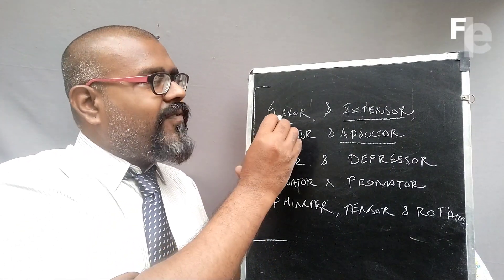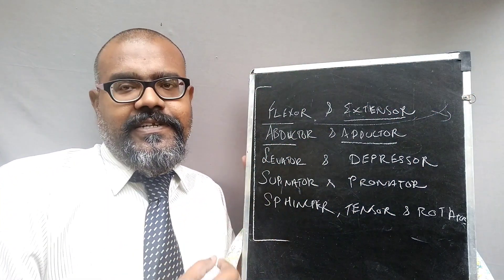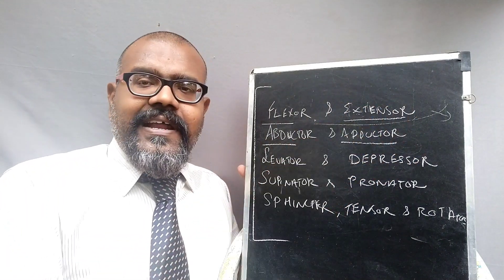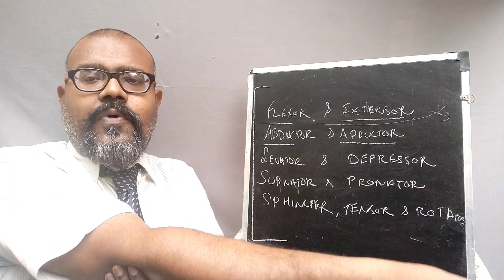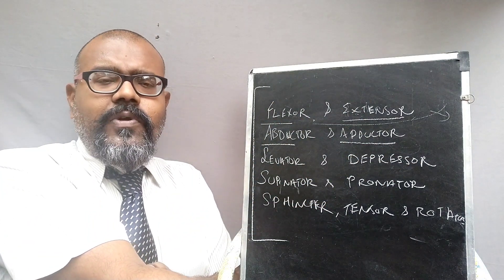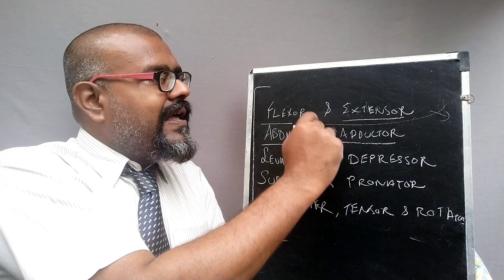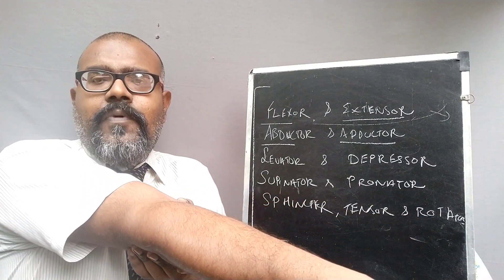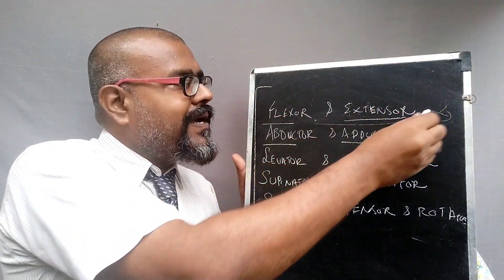Flexor and extensor are related to joint action. The flexor decreases the anterior angle at the joint, while the extensor increases the anterior angle at the joint. For example, at the elbow: if you want to decrease the anterior angle by bending, the flexor muscle is activated. If you want to increase the anterior angle by stretching the elbow, the extensor is activated. So this increasing and decreasing of the anterior angle is done by the flexor and extensor.